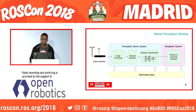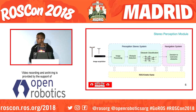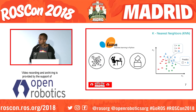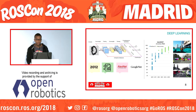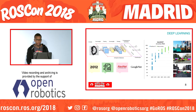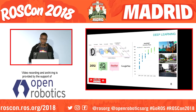The obstacle classification model was based on two approaches. The first one is based on a machine learning algorithm known as K-NN. The other one was based on a deep learning approach — we used the AlexNet architecture and the GoogLeNet architecture as well.